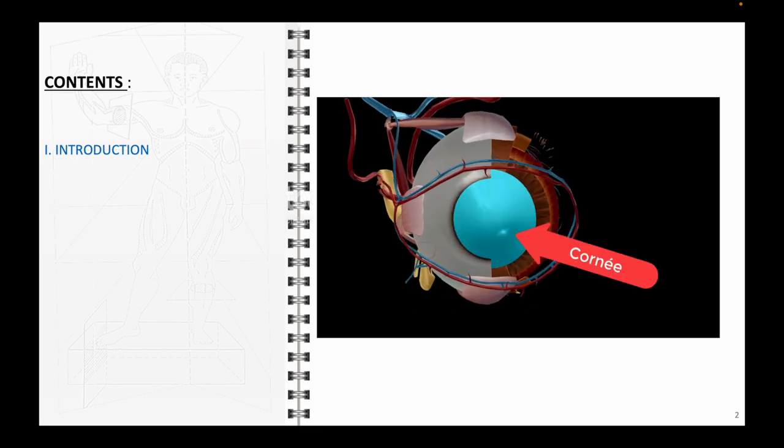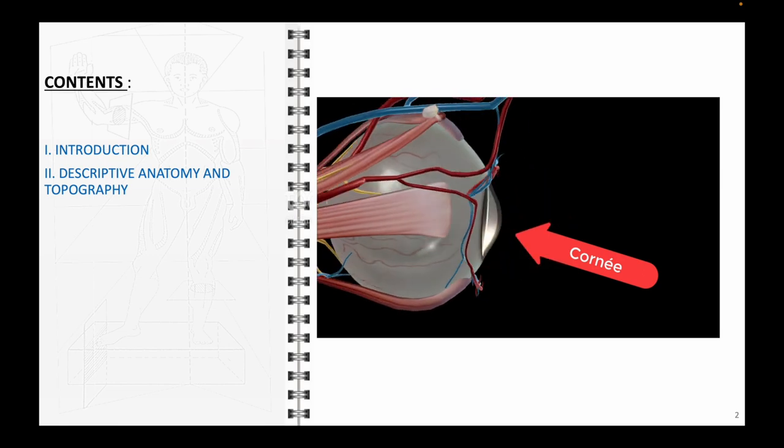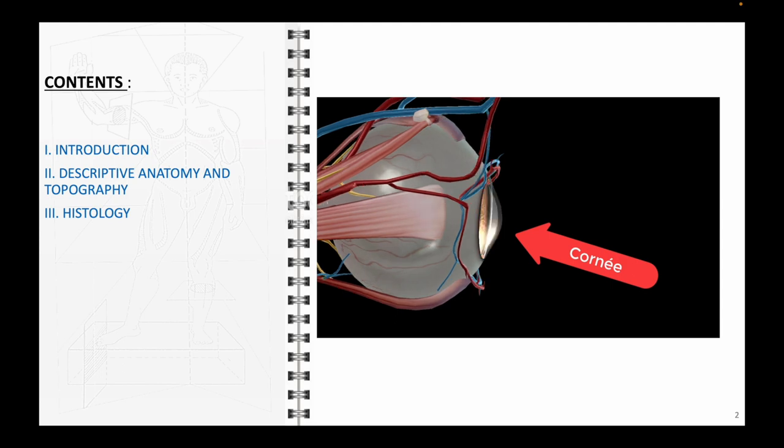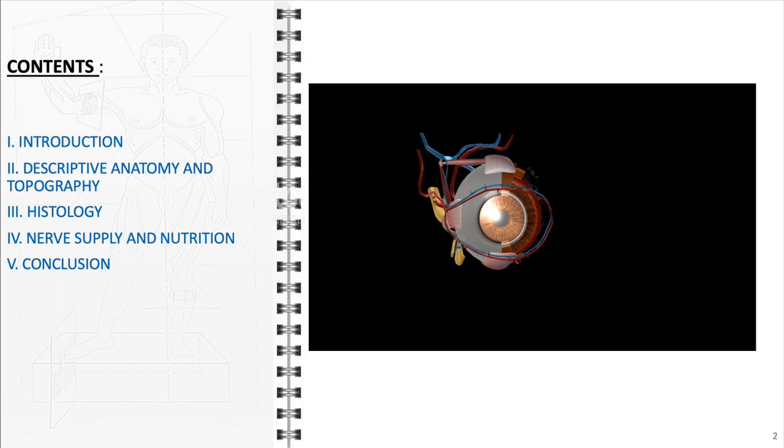We'll then examine the cornea's histological aspects, offering insights into its cellular structure. Following this, we will explore the intricate details of the cornea's nerve supply and its nutritional mechanisms. To conclude, we will highlight key takeaways, summarizing the essential aspects of corneal anatomy.